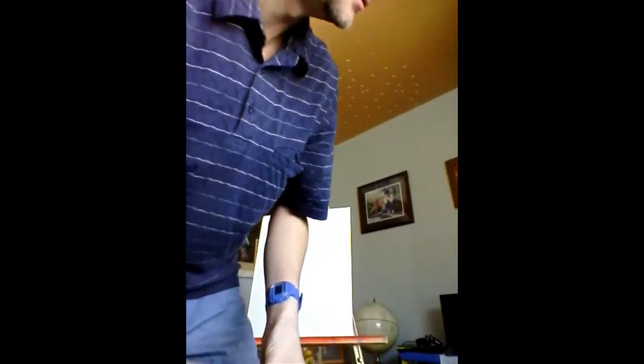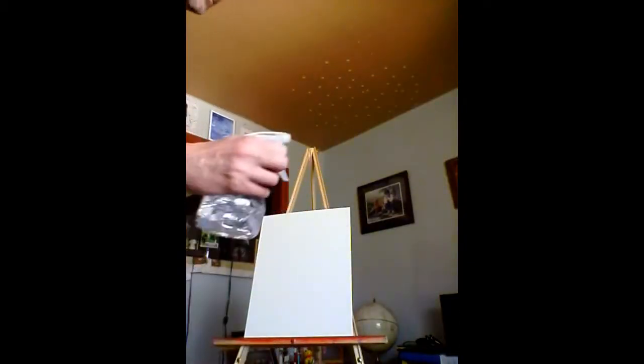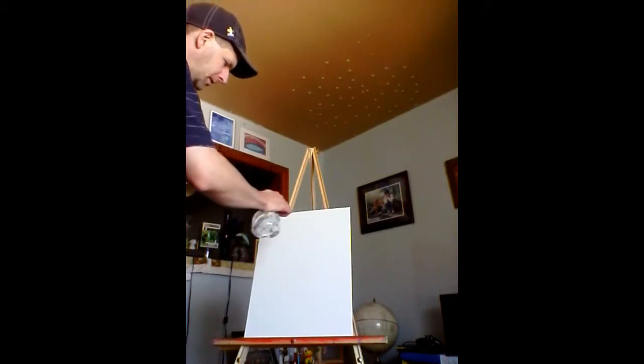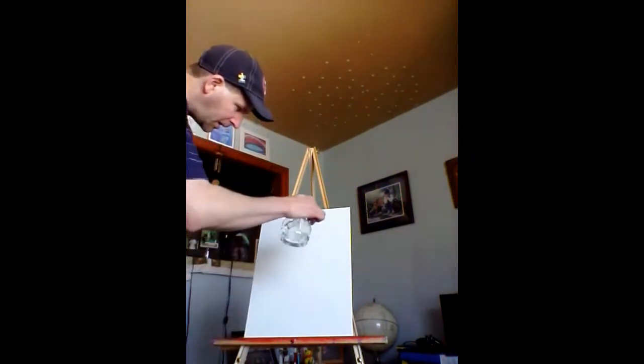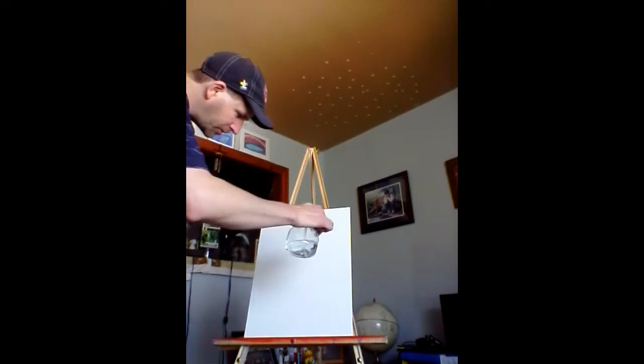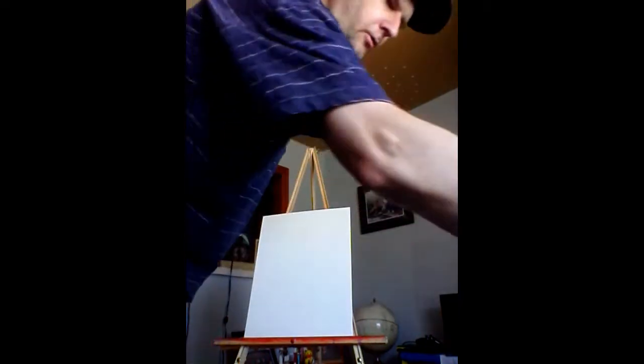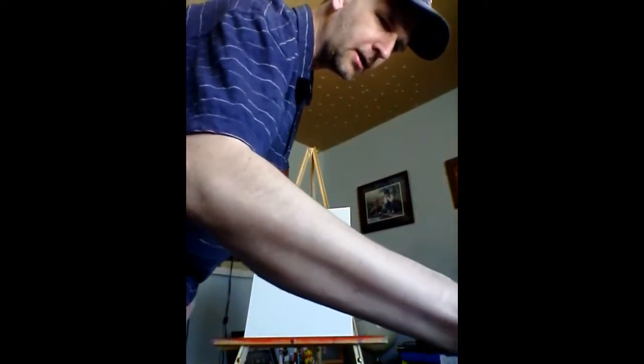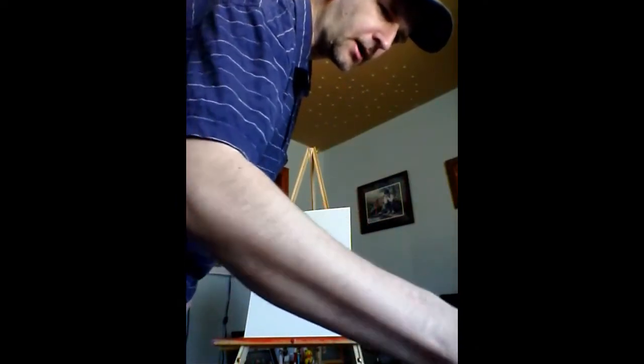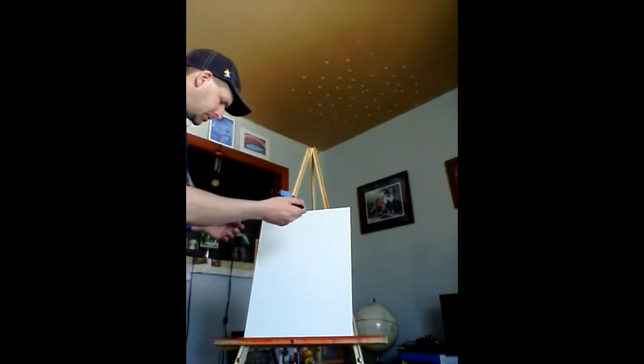So you start out by taking the water here, and you can spray the entire canvas down. The nice thing about this is, once you put it on there, the water is really going to dictate where the paint's going to go, and you put your paint on the roller, and you can start anywhere.